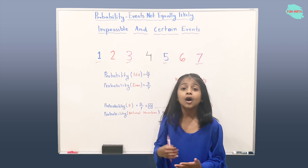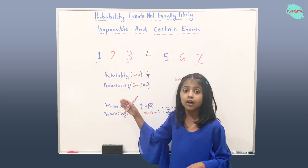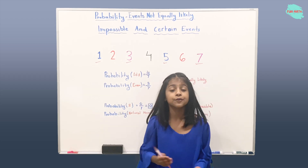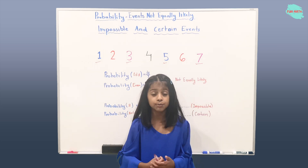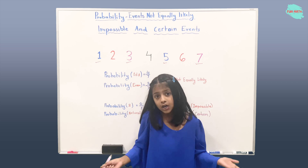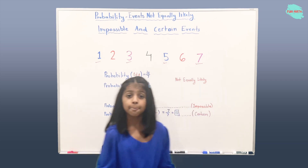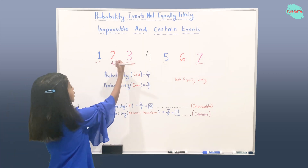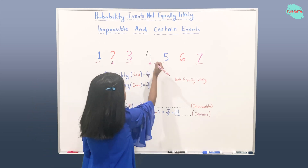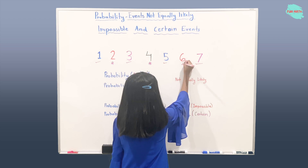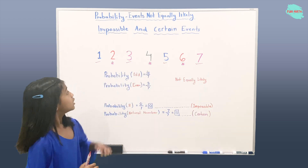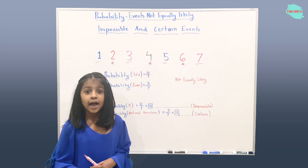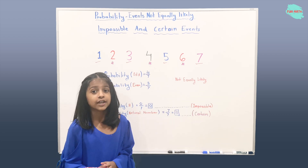So now let's find the probability of getting an even number. We got three over seven. How did we get three as our numerator? We got three as our numerator because there are three even numbers here. The even numbers are two, four, and six — so there are three even numbers. That's why we have three as our numerator, and those are all the possibilities for getting an even number.